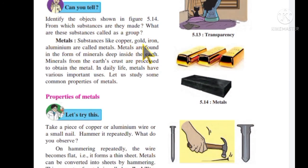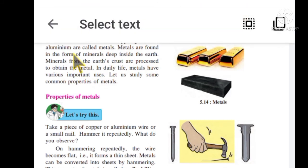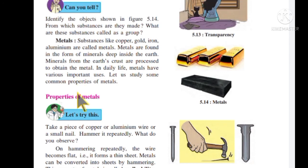Substances like copper, gold, iron, and aluminium are called metals. Metals are found in the form of minerals deep inside the earth. Minerals from the earth's crust are processed to obtain the metals. In daily life, metals have various important uses. Let us study some common properties of metals.